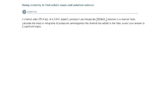Again, we have a chemist adding 350 milliliters of a 0.046 millimolar potassium permanganate KMnO4 solution to a reaction flask. They want us to calculate the mass in milligrams of potassium permanganate that the chemist has added to the flask.